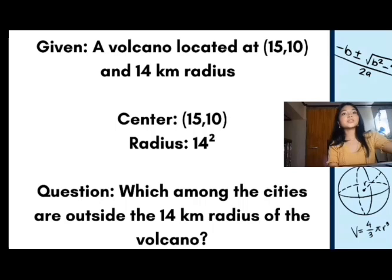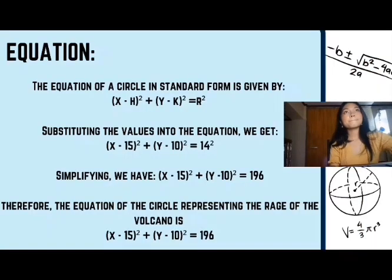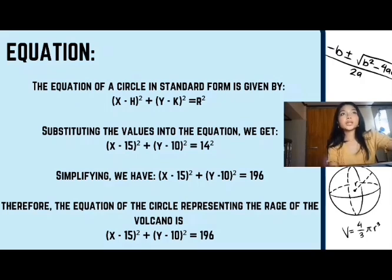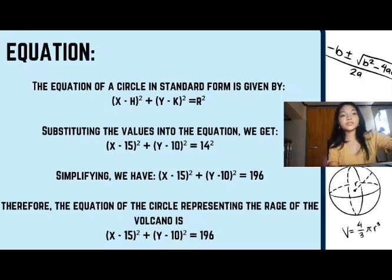The cities outside the 14 km radius of the volcano are being asked. The equation of a circle in standard form is given by (x - h)² + (y - k)² = r². Substituting and simplifying the values, we get (x - 15)² + (y - 10)² = 196 as the equation of the circle representing the range of the volcano.